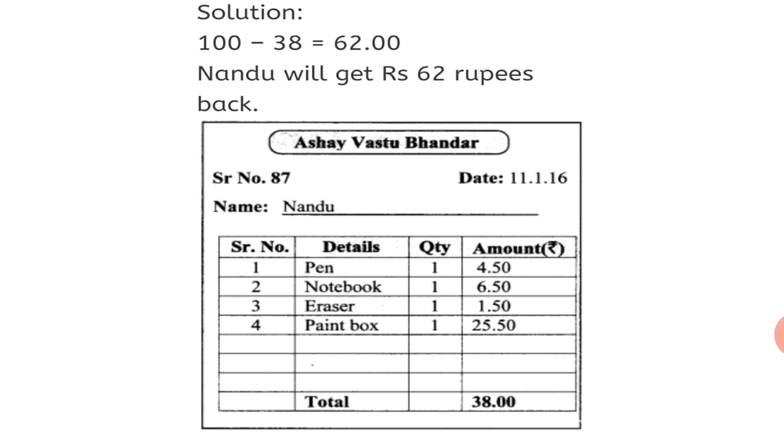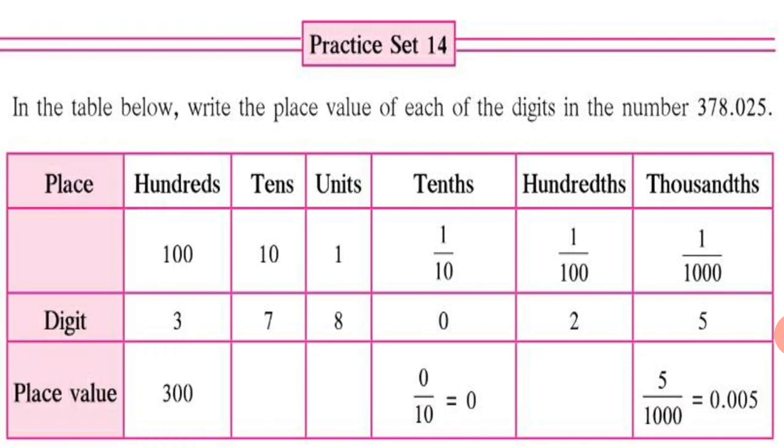So, now, what your answer will be? 100 minus 38 is equal to 62. So, in your textbook, on page number 29, you can enter these values in the boxes. 100 minus 38 is equal to 62. That means Nandu will get 62 rupees back.